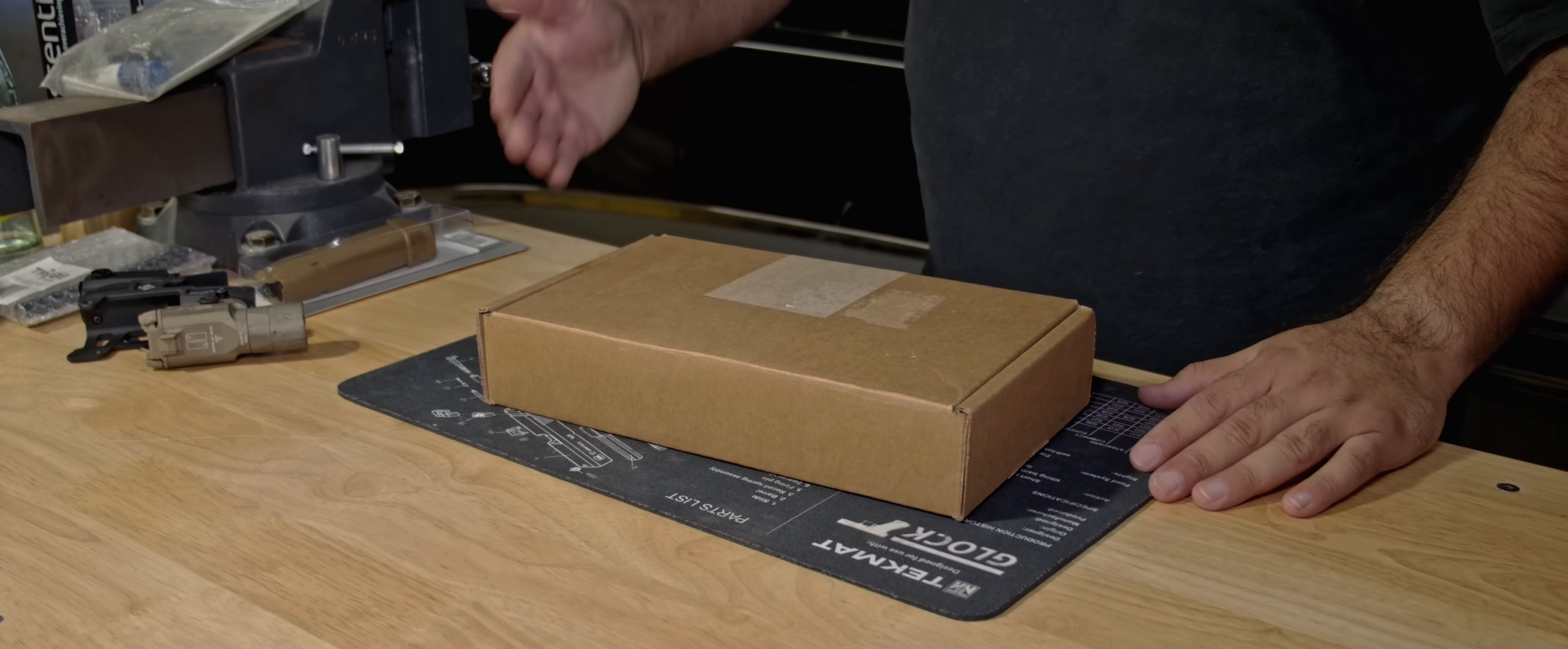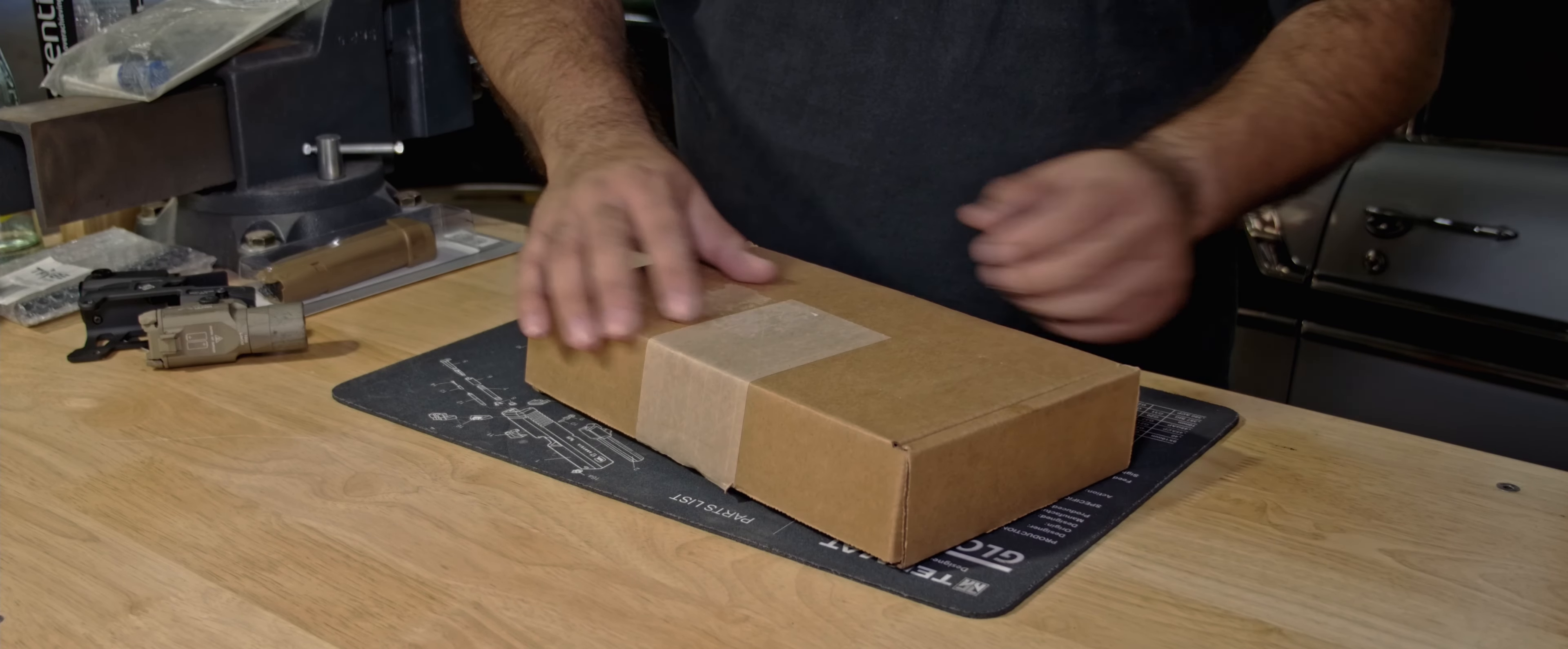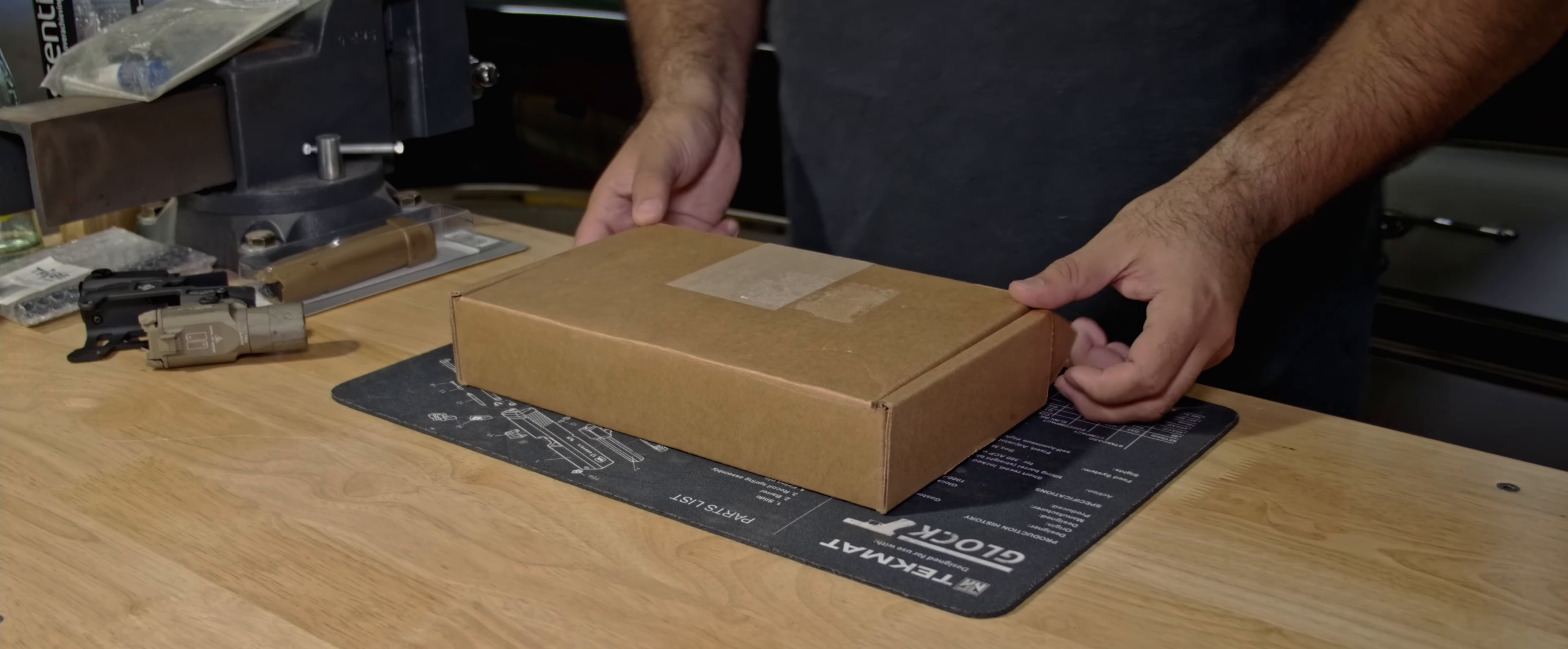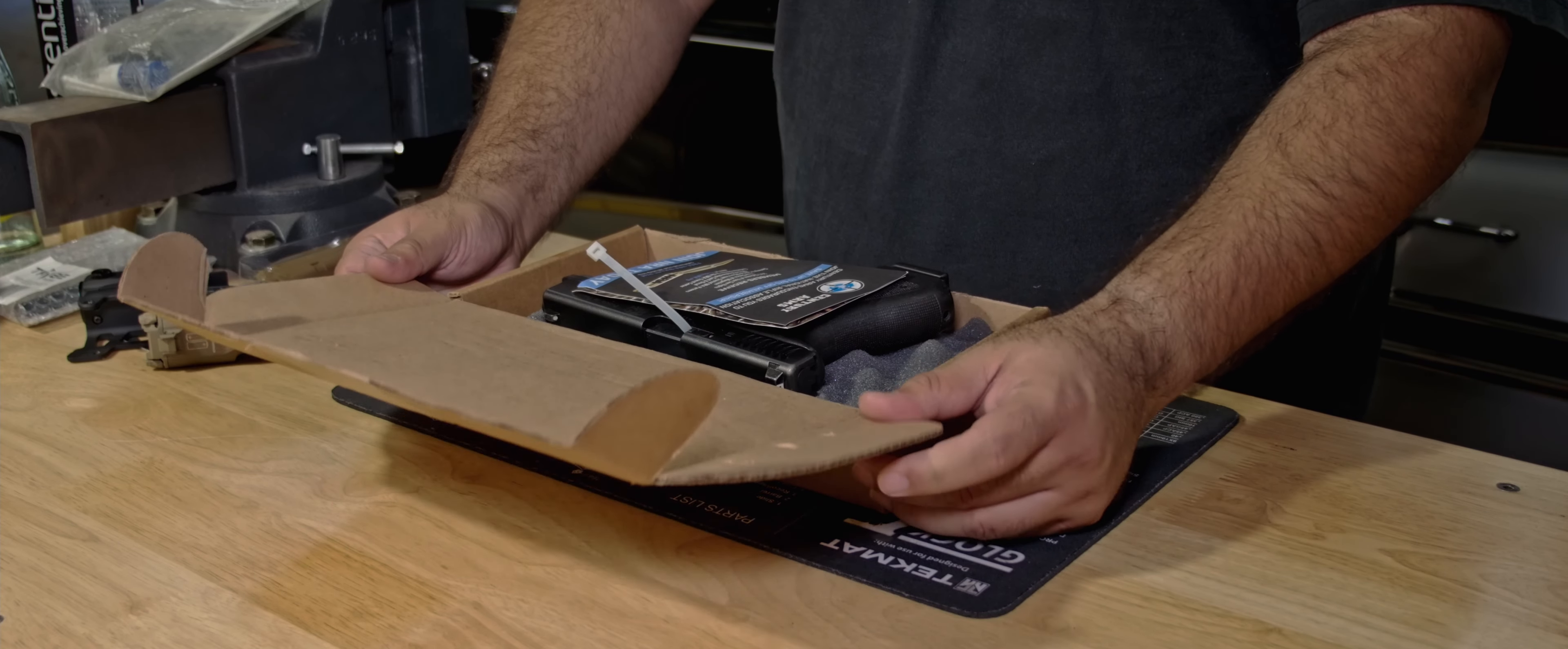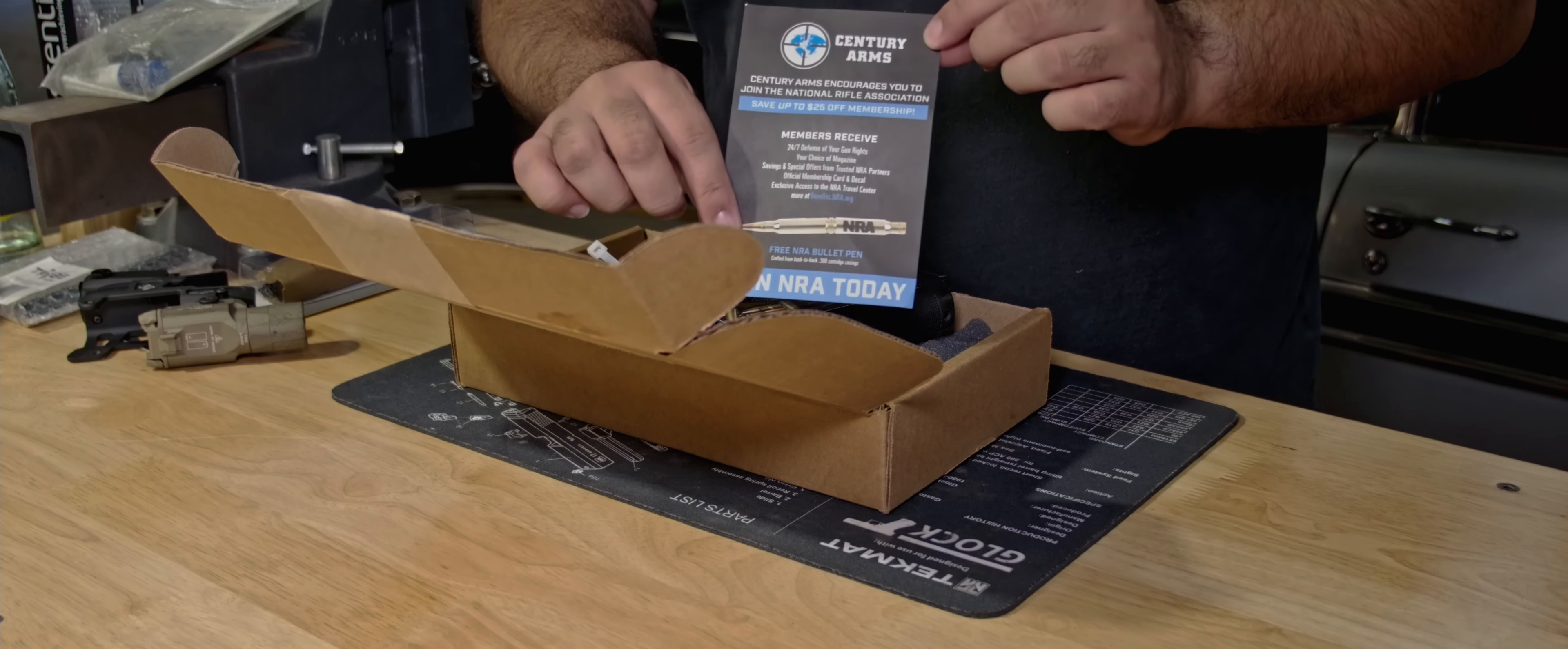Welcome back to another unboxing. This time we got a dog shit brown box, look at that. What could it be? Woohoo, the mystery. Single wall thick brown box, kind of cheap, just generic.